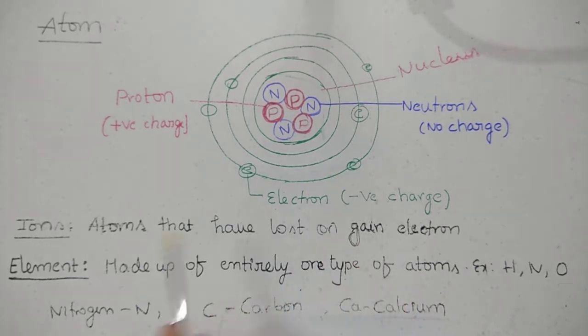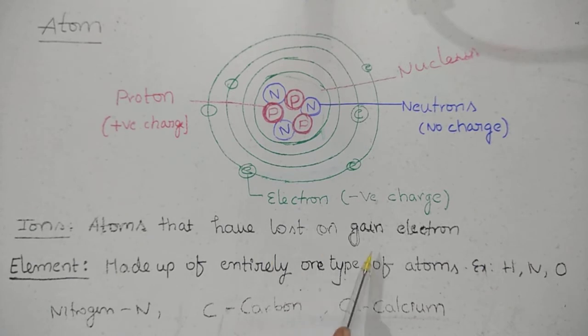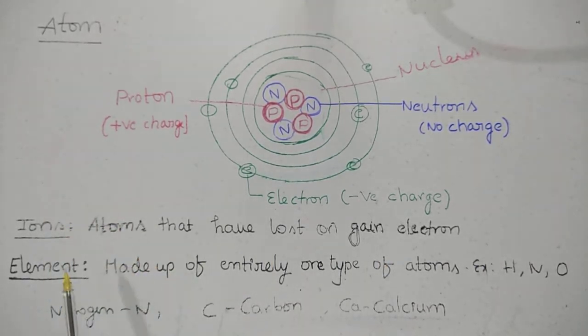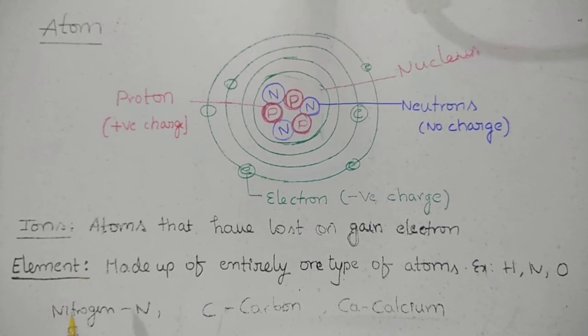So that is called ion. Atoms that have lost or gained electrons are called ions. Then, element.